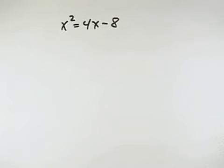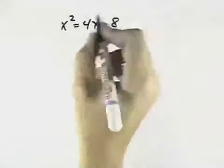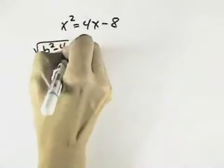Without actually solving this quadratic equation, we want to determine the number and type of solutions. Well, the discriminant is what tells us that, which is the square root of b squared minus 4ac.